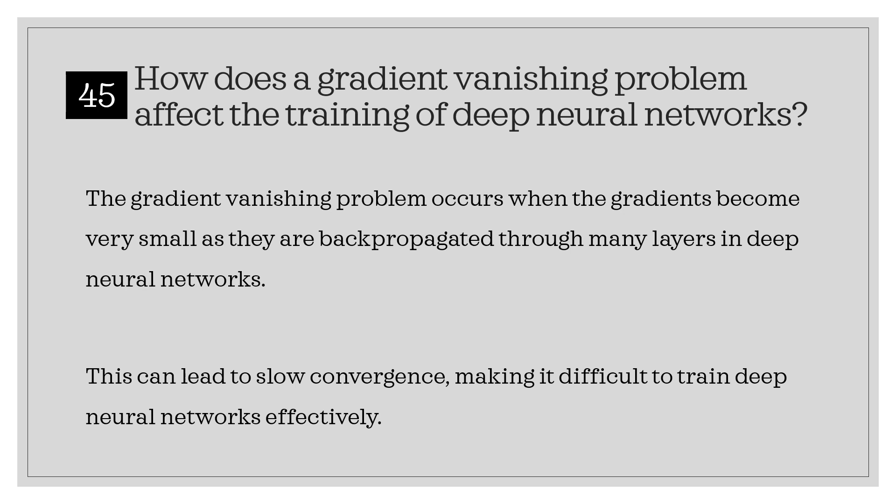How does the gradient vanishing problem affect the training of deep neural networks? The gradient vanishing problem occurs when the gradients become very small as they are backpropagated through many layers in deep neural networks. This can lead to slow convergence, making it difficult to train deep neural networks effectively.